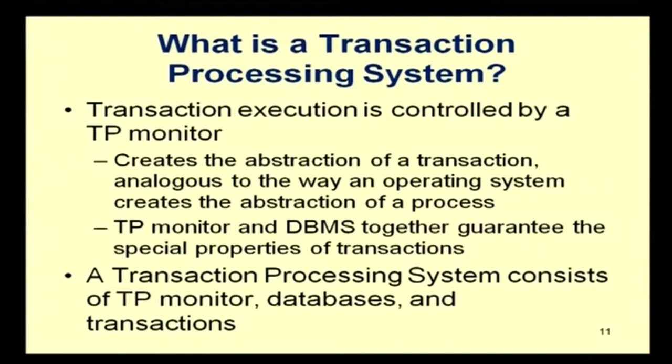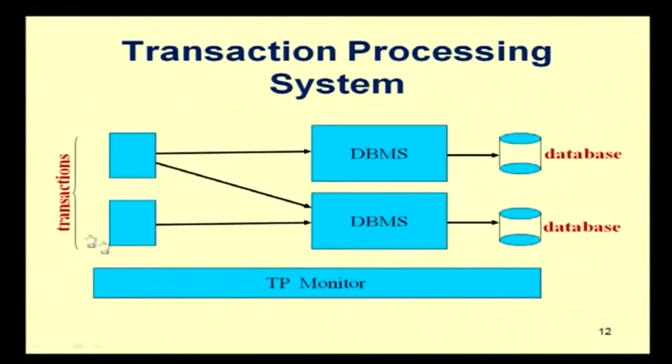A transaction is a sequence of operations, to be executed as a whole, taking the database from one consistent state to another, and it is an atomic unit of operation. A transaction processing system consists of three things: the transaction processing monitor, the databases, and the transactions. Together these three things form a transaction processing system.